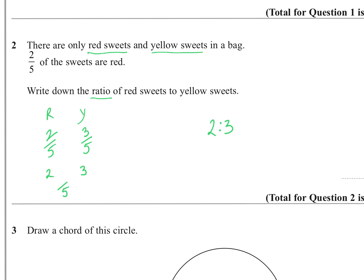Another way to think about it: start with the ratio two-fifths to three-fifths. You might think that's right, but they want whole numbers. Multiply both sides by five and you get 2:3, which is the answer.